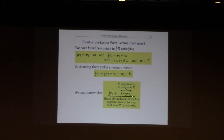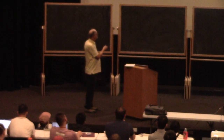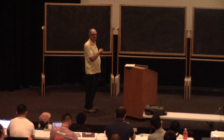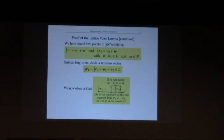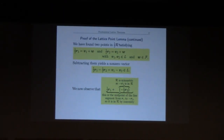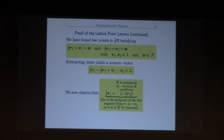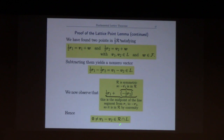So this quantity is in the region R, and it equals v1 minus v2, which is in L. Remember what we're trying to prove: we need a non-zero lattice vector in region R. This difference is in the region, v1 minus v2 is in the region, it's in L because v1 and v2 are in L and L is a group, and it's not zero because r1 and r2 were distinct. And we're done.